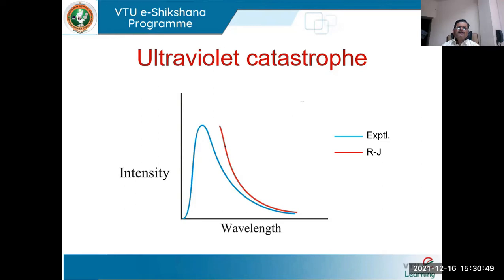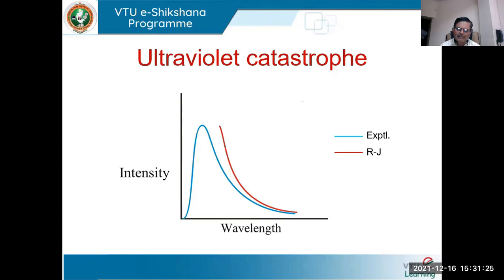The term 'catastrophe' in this context indicates the mismatch observed between the calculated result and the experimental result in the lower wavelength limits, hence it is identified as ultraviolet catastrophe. So Wien's law is very useful for shorter wavelength limits and Rayleigh-Jeans law is very useful for longer wavelength limits. We don't have a single relationship applicable for both, which indicates that something is missing in our understanding — the classical approach is not sufficient for the black body radiation spectrum problem.